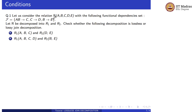Question 1: Consider relation R having attributes A, B, C, D with functional dependency set F = {AB → C, C → D, B → E}. Let R be decomposed into R1 and R2. Check whether the following decomposition is lossless or lossy joint decomposition.